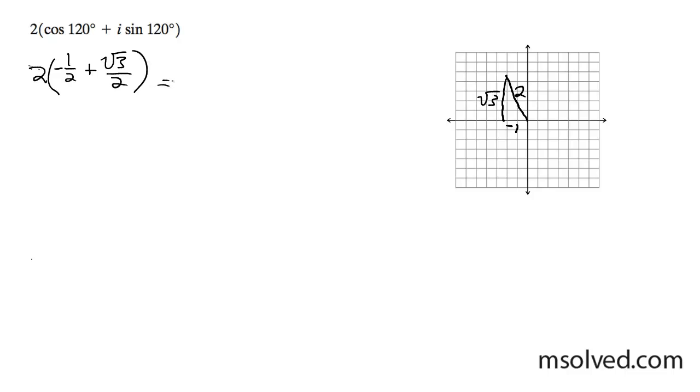You distribute this, you end up with negative 1 plus root 3 i. And that is it.